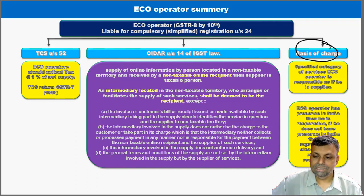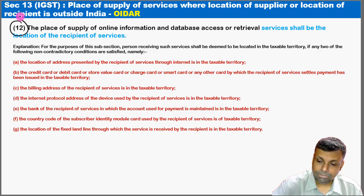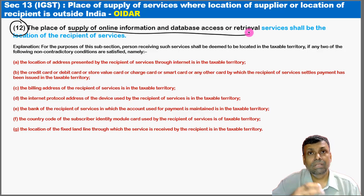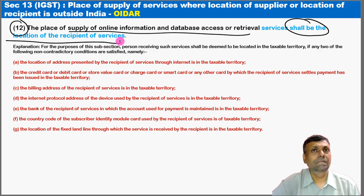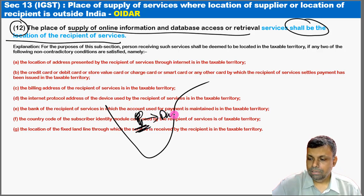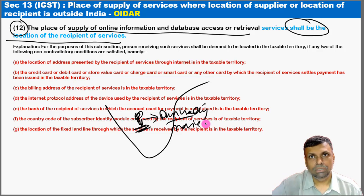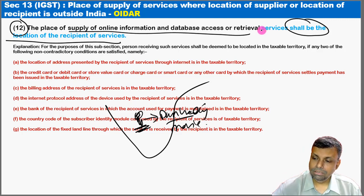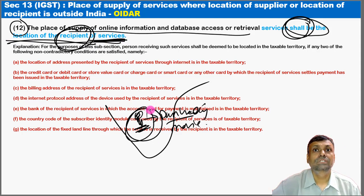Section 13 of IGST — the place of supply — at item number 12, deals with the place of supply of online information and database access retrieval services, known as OIDAR. If anyone accesses these online services, the place of supply shall be the location of the recipient. For example, a gentleman in India downloading or streaming a movie from Netflix — the recipient is inside India, so GST implications arise in India.